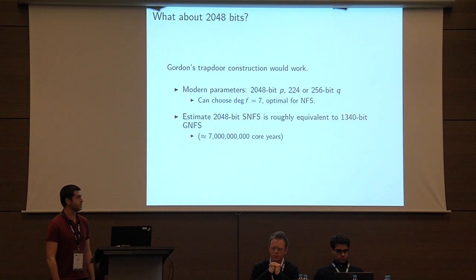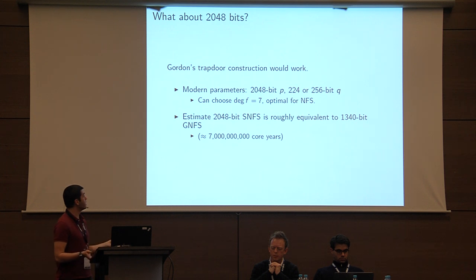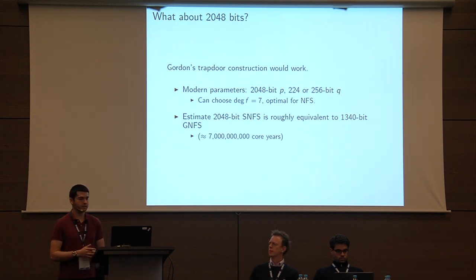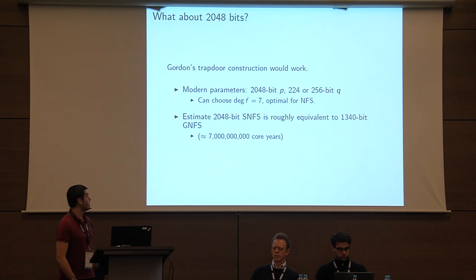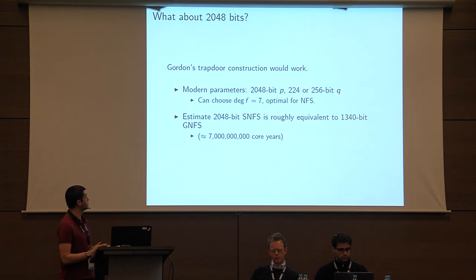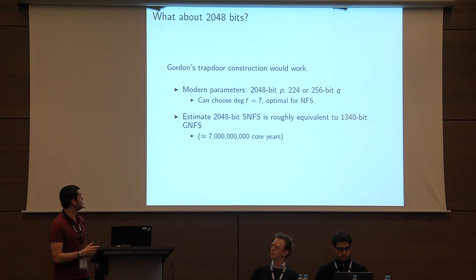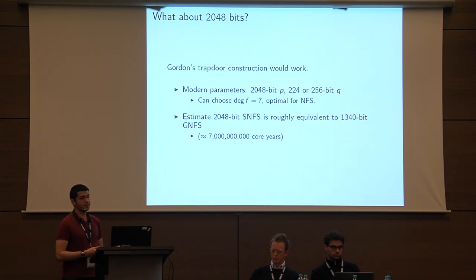What about 2048 bits? Gordon's trapdoor construction would still work with modern parameters. DSA primes of 2048 bits today usually have a 224-bit or 256-bit subgroup, which allows a degree-7 polynomial — good for the number field sieve — using Gordon's algorithm. However, actually running the special number field sieve, even for a trapdoor number, would still probably take about 7 billion core years. Compared to our 400 core years for the kilobit SNFS, it's probably not really feasible, but certainly not giving you the 2048-bit strength you'd otherwise expect.